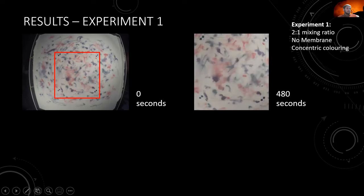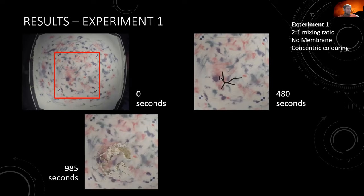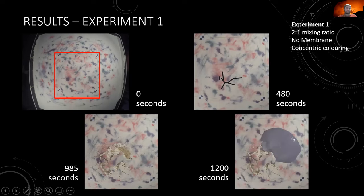At around 480 seconds a fracture system starts to form in this oriented section. By 985 seconds there has been quite a lot of deformation — the uplift of the central section is several centimeters — and quite steep ring fractures have formed. Then at around 1,200 seconds an eruption occurs and a subsequent lava flow forms.